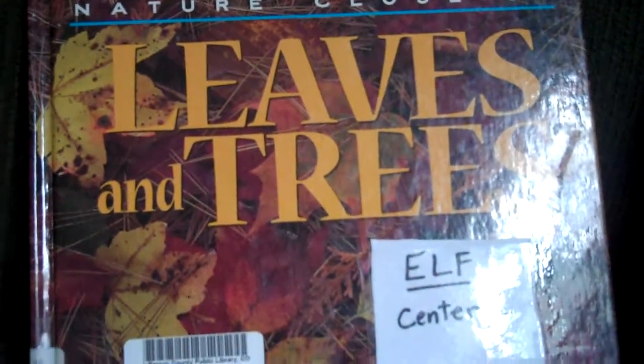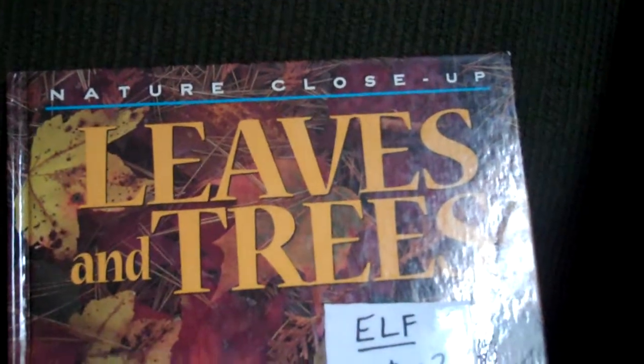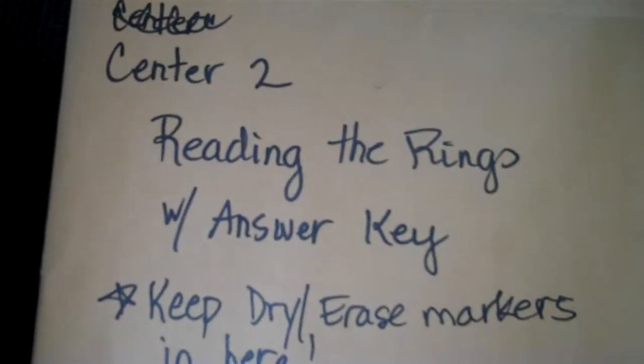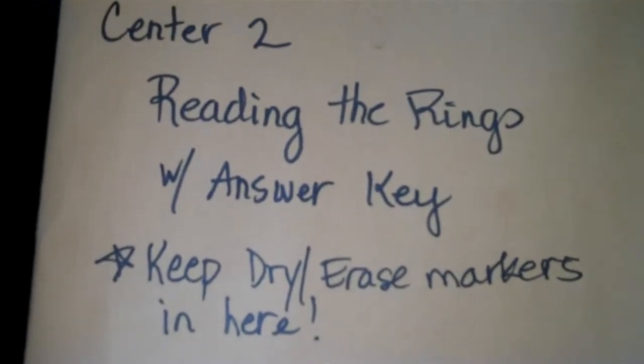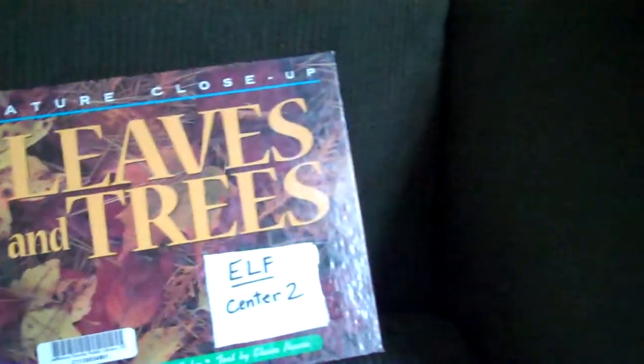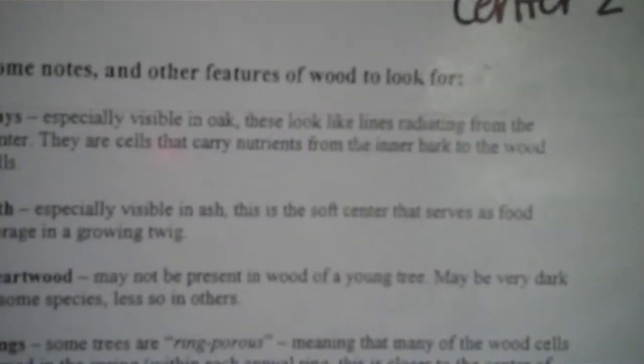There are tree cookies — I believe there are seven total tree cookies that are all cross-sections of trees. There are magnifying glasses. There is a book called Leaves and Trees with lots of interesting information. And then there's a folder that's got the activity called Reading the Rings, and there's an answer key. And then there are various handouts and notes that are information you can go over and incorporate while the kids are looking at the samples.